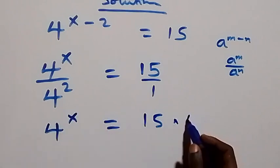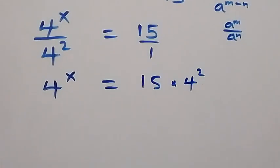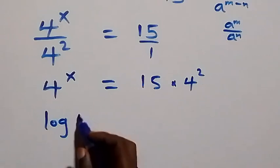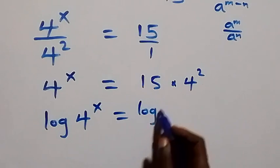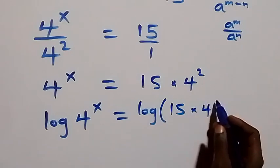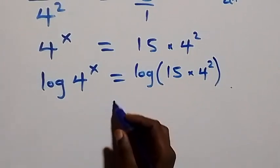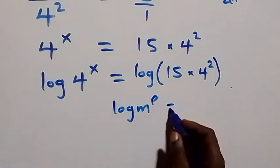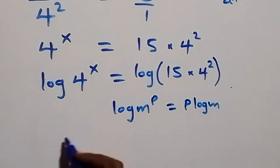...4 squared. Then the next step here: let's take the log on both sides. That is here we have log of 4 raised to power x, then equals to log in brackets 15 times 4 squared on this side. Then here we can apply the power rule of logarithm, from where we have log m raised to power p which equals p log m.